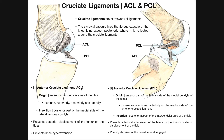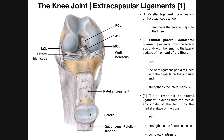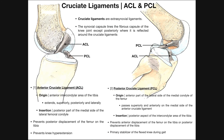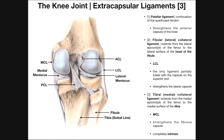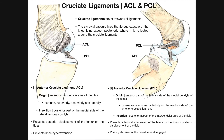The anterior cruciate ligament — the ACL — has its origin on the anterior intercondylar area of the tibia. From an anterior view, as the ACL rises superiorly, it goes posteriorly and laterally. The key thing to remember is that as it goes superiorly, it goes laterally. It inserts on the posterior part of the medial side of the lateral femoral condyle — so as the ACL moves up and back, it goes laterally and inserts on the medial surface of the lateral femoral condyle.